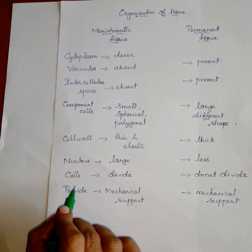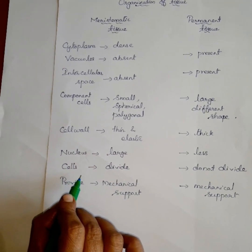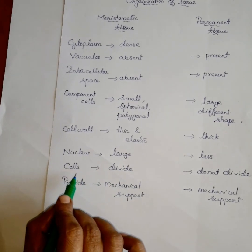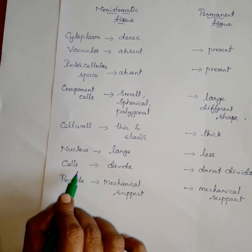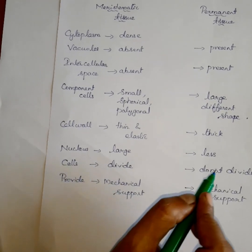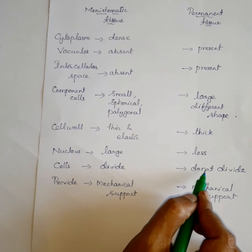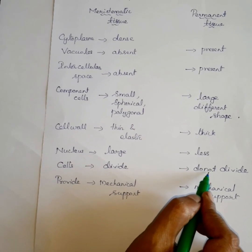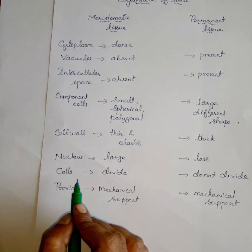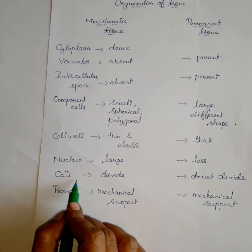Next one — cells. In meristematic tissue, cells grow and divide regularly. But in permanent tissue, the cells do not divide continuously.